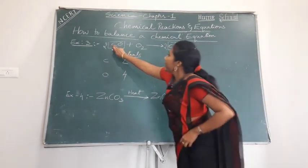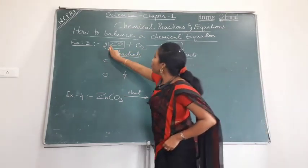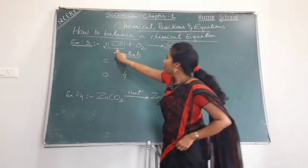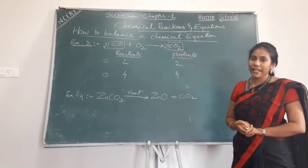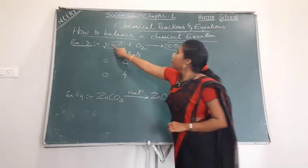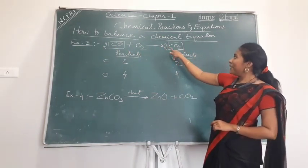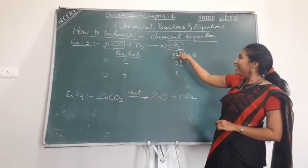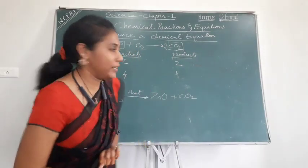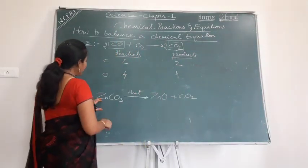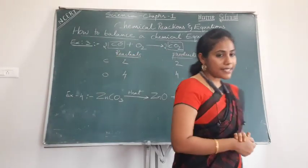Cross-check: two carbons on each side. Oxygens: 2 + 2 = 4 on the reactant side, and 2 × 2 = 4 on the product side. Everything is balanced. That is how you balance this equation.